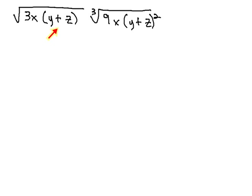Here, we're multiplying the square root of 3x times y plus z by the cube root of 9x, y plus z squared.